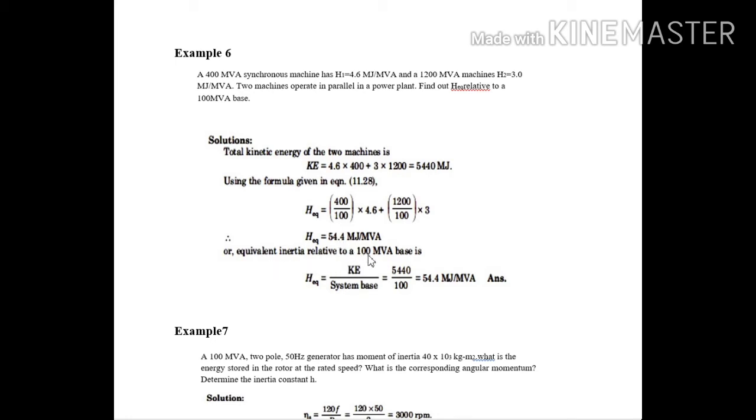Or, on the base of 100 MVA, the formula we are knowing is the kinetic energy stored in mega joules to the system base. That is G base we used to take. So the answer we are getting on the base value of 100, it is 54.4 mega joules per MVA. Got it?